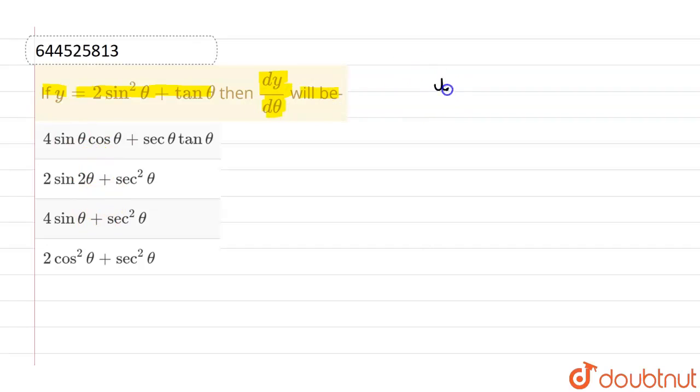So what we are given, we are given y which is nothing but 2sin²θ plus tanθ.